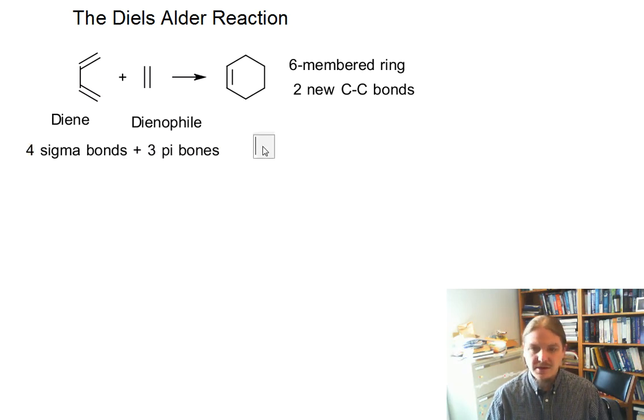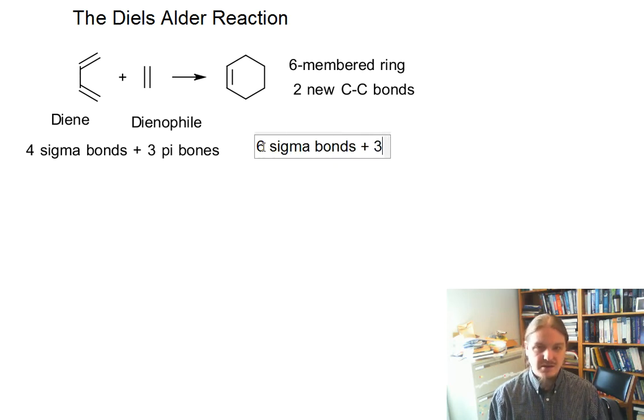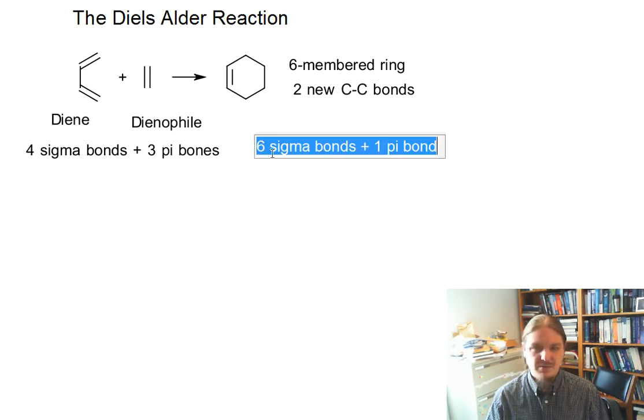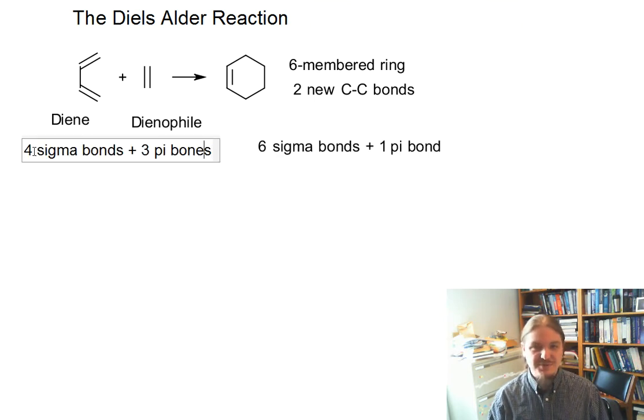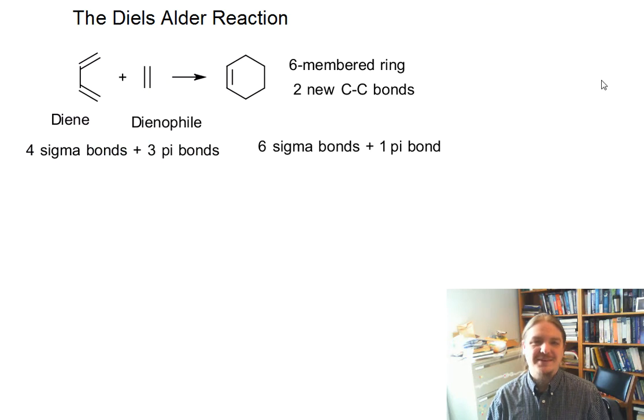If we look on the product side, I have six sigma bonds and one pi bond.